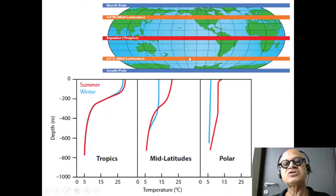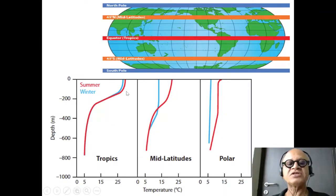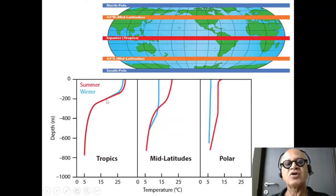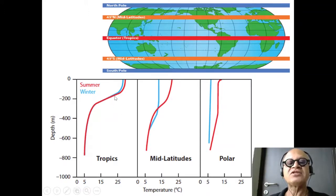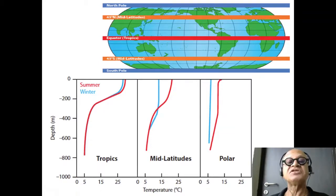The ocean also has a strong seasonality. In the tropics, the seasonality is fairly weak and the stratification tends to be strong, because the surface gets warmer, the water column gets stabilized, and this shows up as a lack of nutrients and low productivity in the oceans, except in very strong upwelling regions.